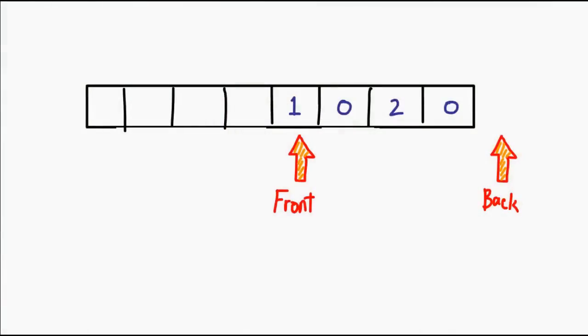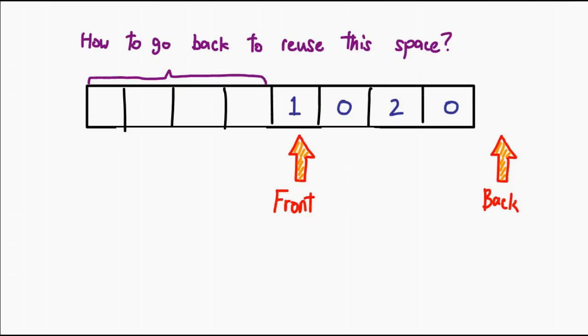My back pointer has hit the very end of the array, but really, I've got lots of free space at the front of the array. Essentially, you can actually allow your back pointer to wrap over to the front of the array.